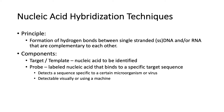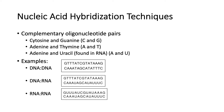Then we have the probe. These are labeled nucleic acids that bind to a specific target sequence. The probe detects a sequence specific to a certain microorganism or virus, and usually the label of the probe is detectable visually or using a machine. The probe is able to attach to the target because of complementary oligonucleotide pairs.